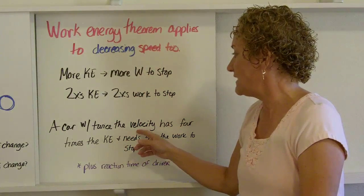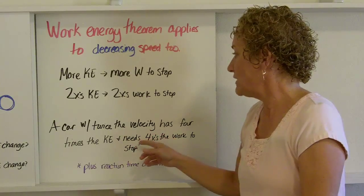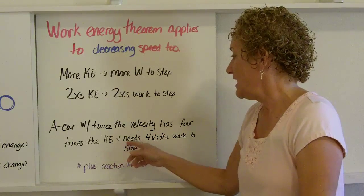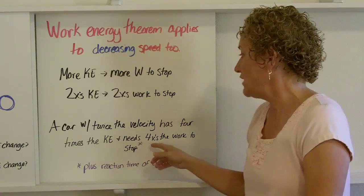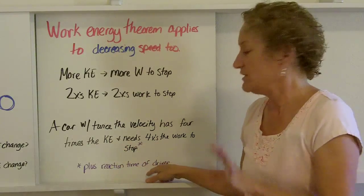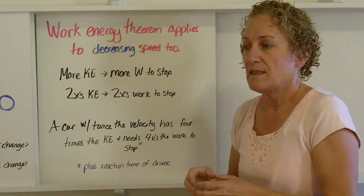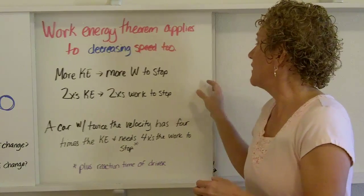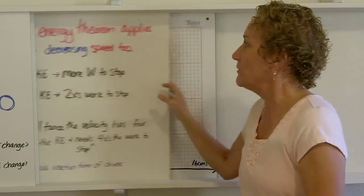So a car with twice the velocity has four times the kinetic energy, and if it has four times the kinetic energy, it needs four times the amount of work to stop, plus the reaction time of the driver. So let me give you a graphic, if you will, of what it looks like.